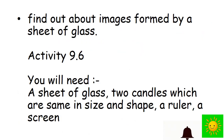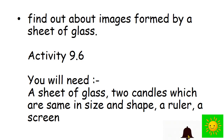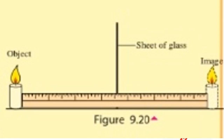Let's find out about images formed by a sheet of glass. We can do this activity by using a sheet of glass, two candles which are the same size and shape, a ruler, and a screen. Place the ruler perpendicular to the sheet of glass and place a lighted candle at the far end of the ruler as shown in the figure. Observe the image of the candle formed through the sheet of glass. It is more suitable to carry out this activity in a dark place. Place the other candle where you see the image as shown in this figure.